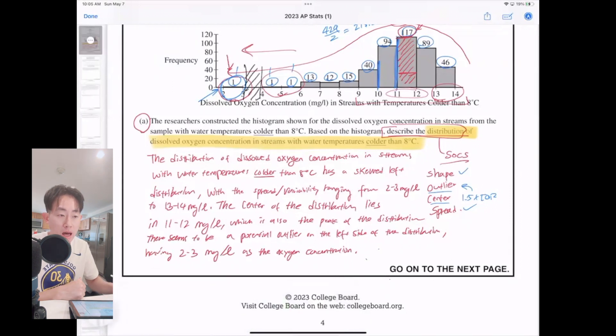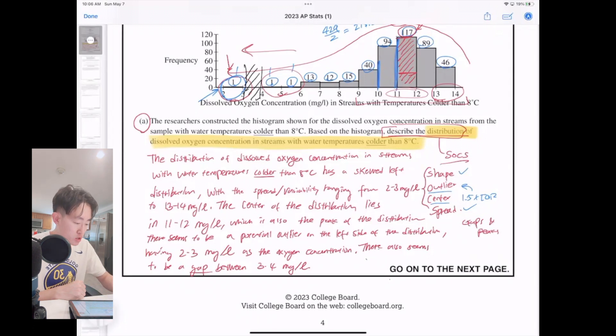And the last thing that you could potentially say—this is not a necessity, but there's a little gap here. And so you can also say there seems to be a gap between 3 to 4 milligrams per liter. So it's empty, we have no data points present for that. So that will be a gap. So honestly, if you just did SOCKS with shape, outlier, center, spread, you should have been fine. The gaps and peaks is just the icing on the cake. It's just extra stuff. I'm sure that they will give you full credits as long as you have SOCKS in here.